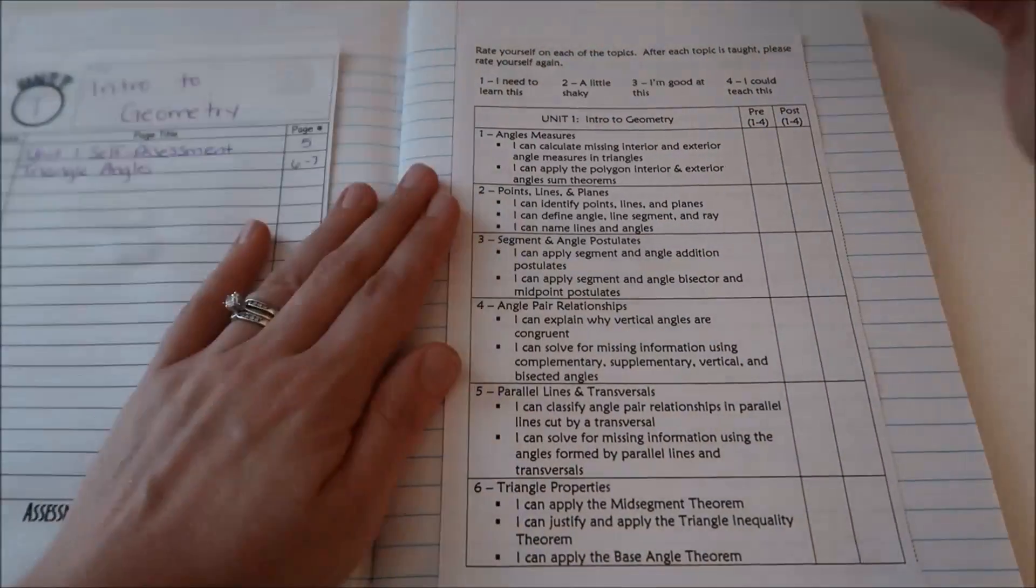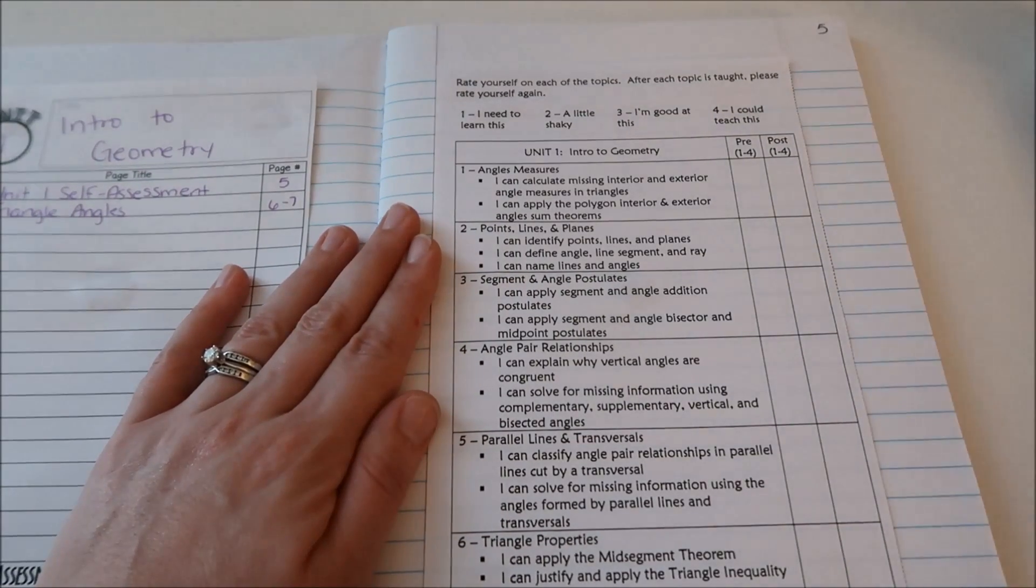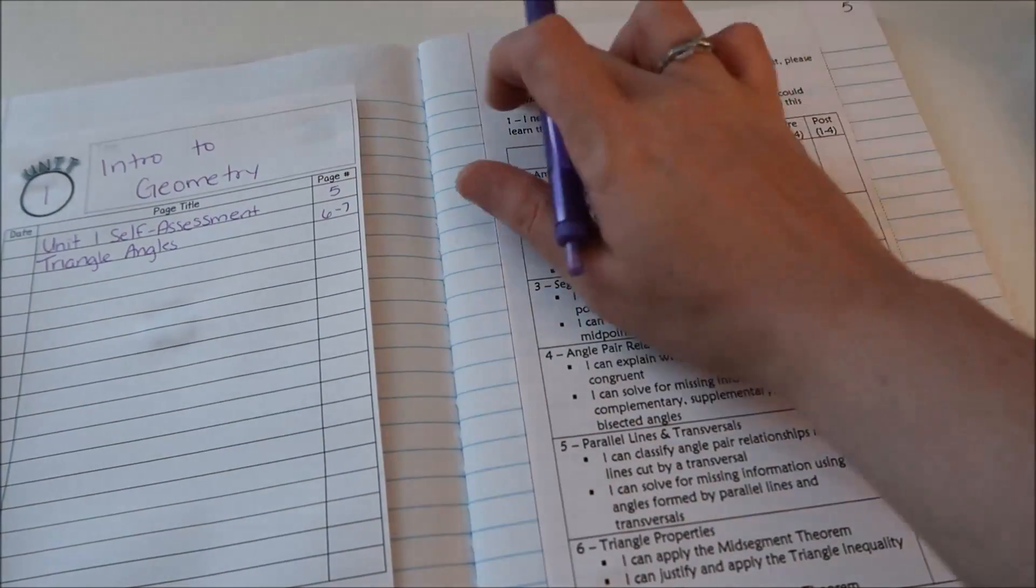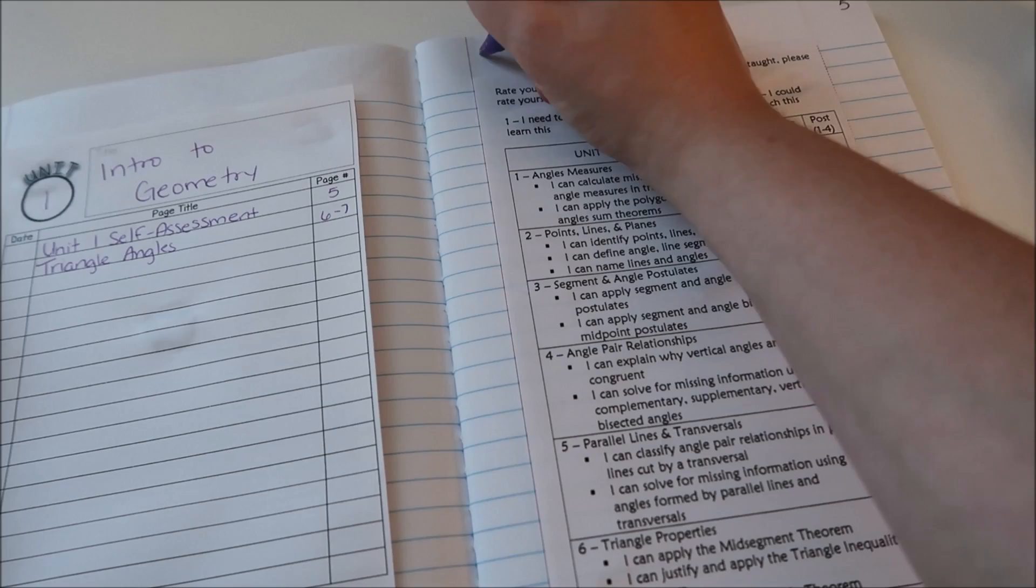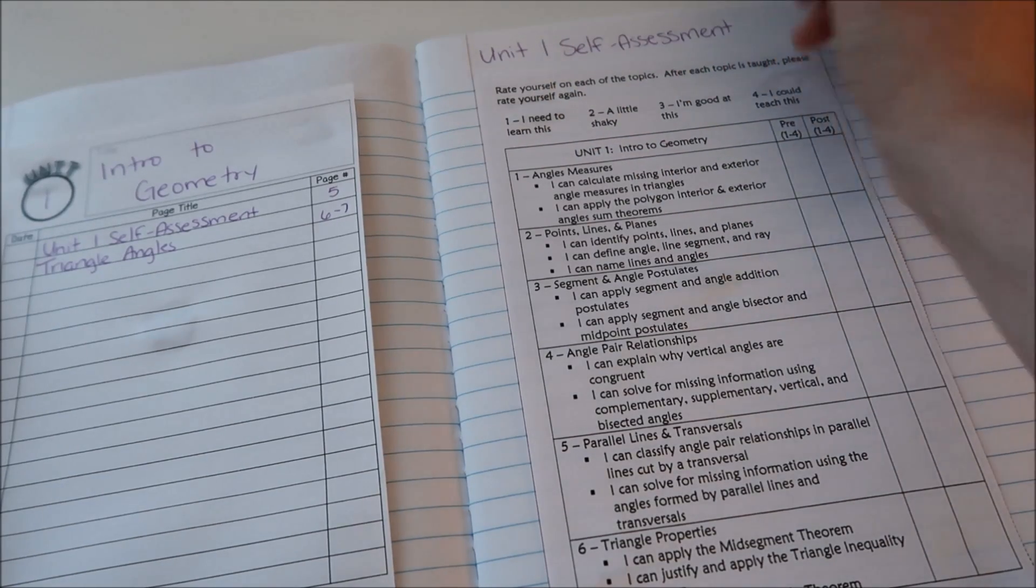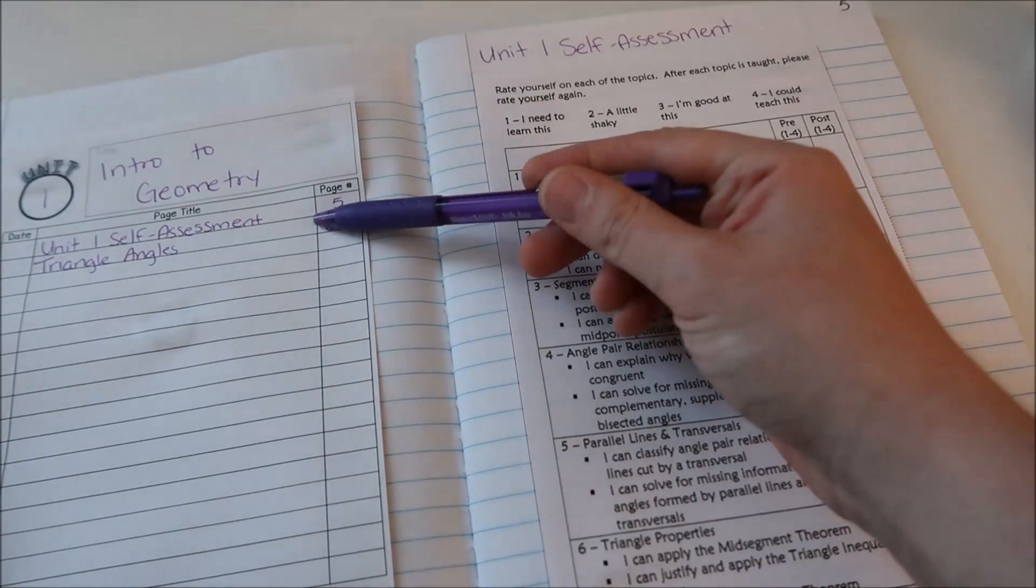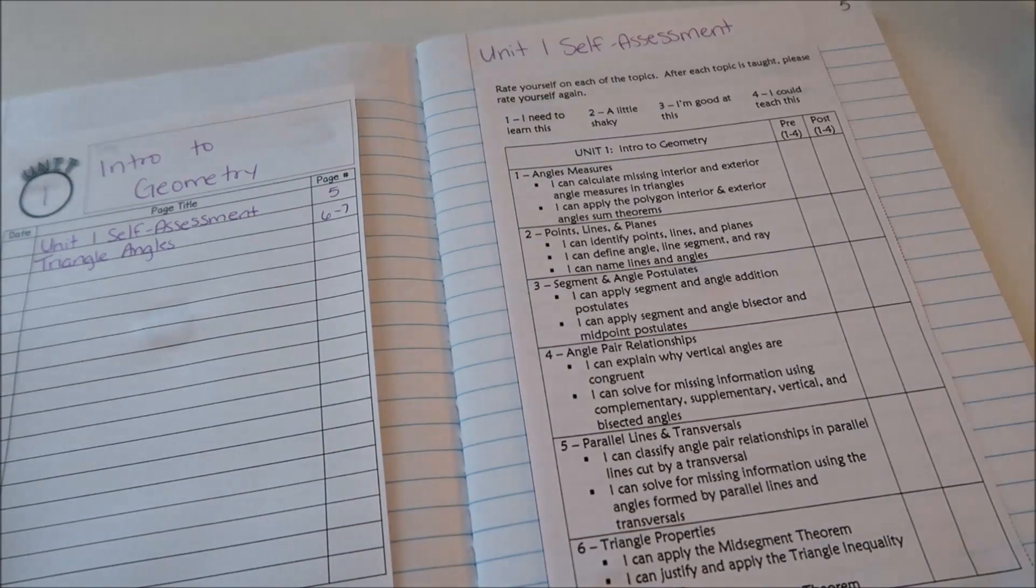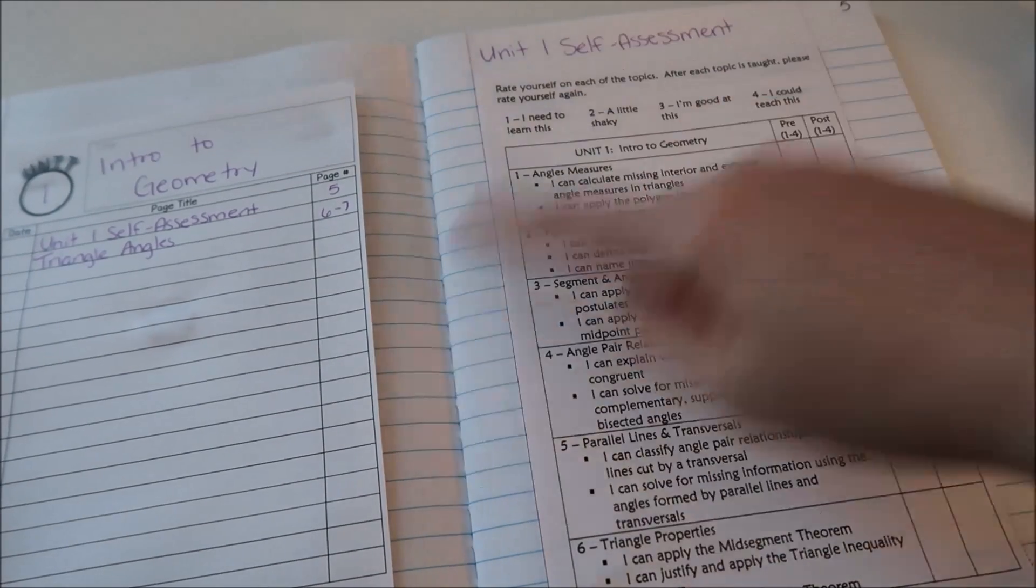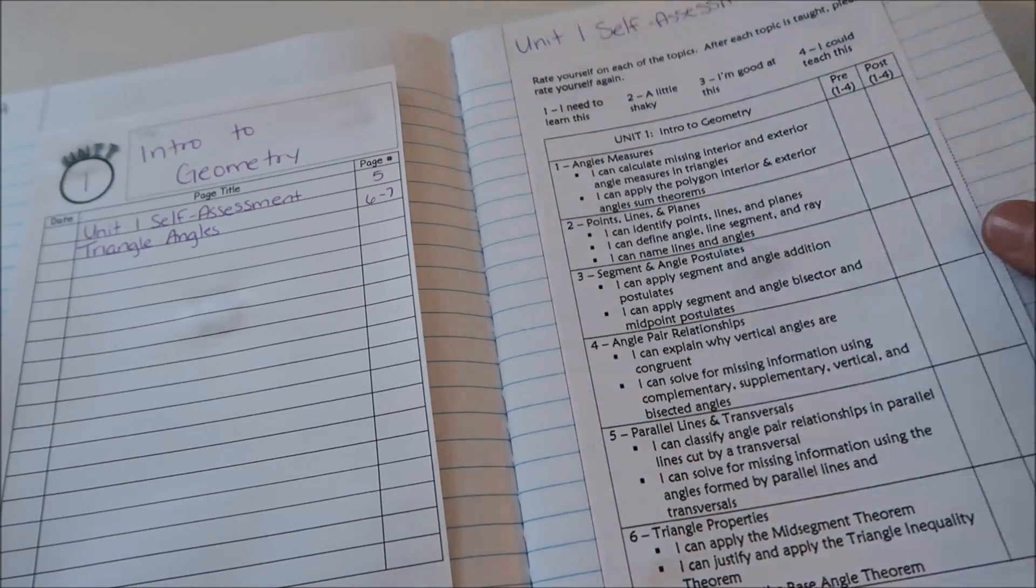Okay this is page five so I'm putting a five up in the corner and this is my unit one self-assessment so I'm going to write that up above the paper that I glued in. This would be the heading that's required of my students. My students often complain that it's overkill to have to write both the heading and the page on the table of contents but I always tell them if you're flipping through your notebook you're going to see the headings before you find the table of contents most likely.